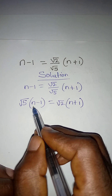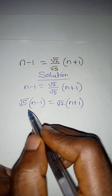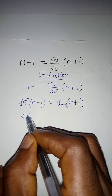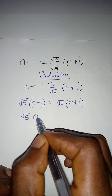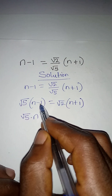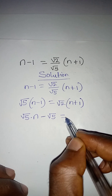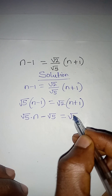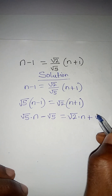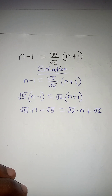Since we are looking for n, I will open this bracket so that n can come out. So root 5 times n gives us root 5 n, and root 5 times minus 1 gives us minus root 5. This equals root 2 times n, plus root 2 times 1, which is root 2.